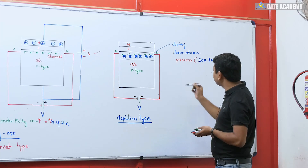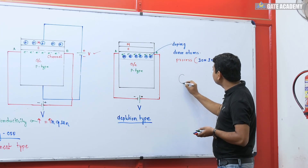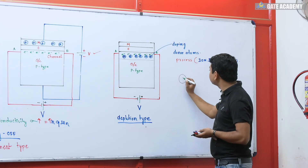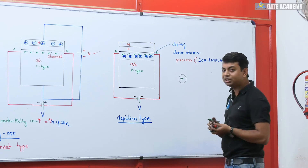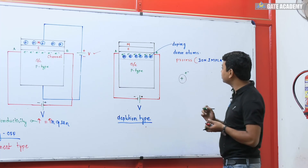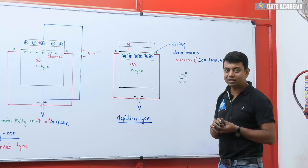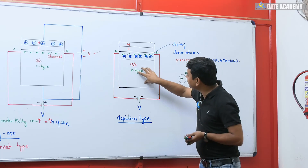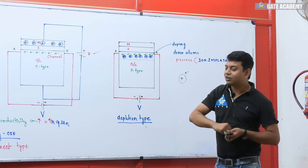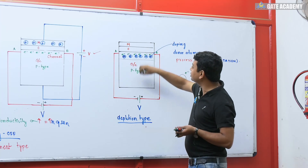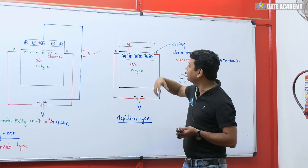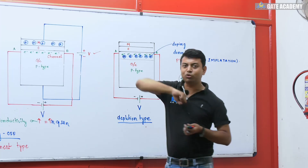Donor atoms — how do you represent them? They are positively charged ions with one extra electron present. The same thing we can see here. In the P-type semiconductor, a region has been created. This region, because of the channel's conductivity, exists without applying any external voltage.